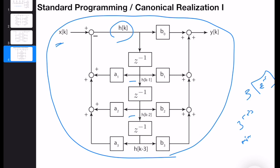In the textbook, this is called a standard programming technique. I also call it canonical realization. Why do I call it canonical realization? Because later in the state space lectures, we will use this diagram structure and assign the states of the system as h[k], h[k-1], h[k-2]. We will form a state space representation, and it will be in controllable canonical form.